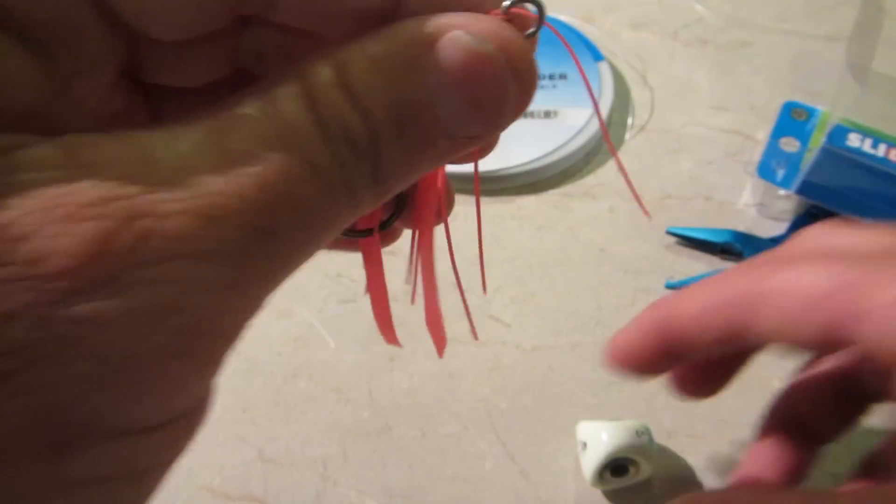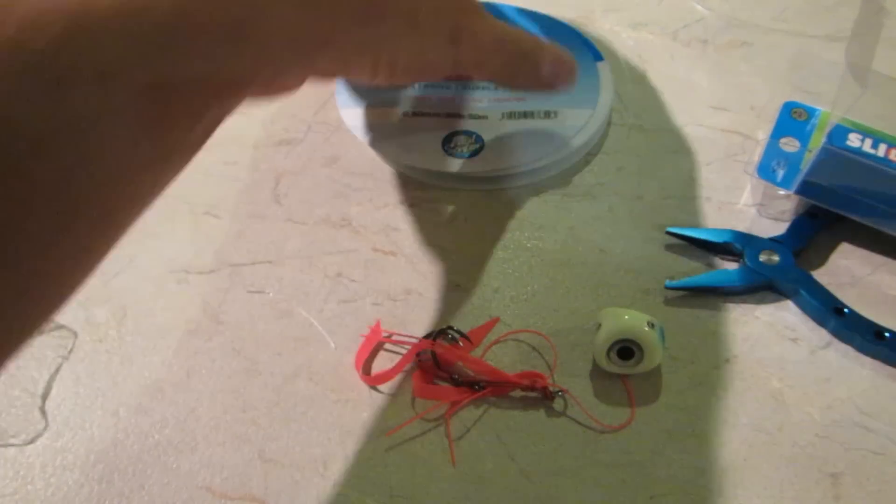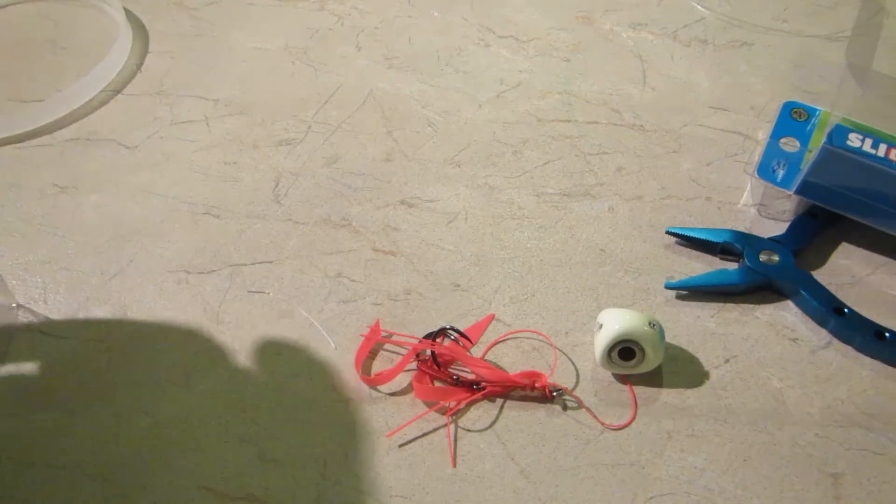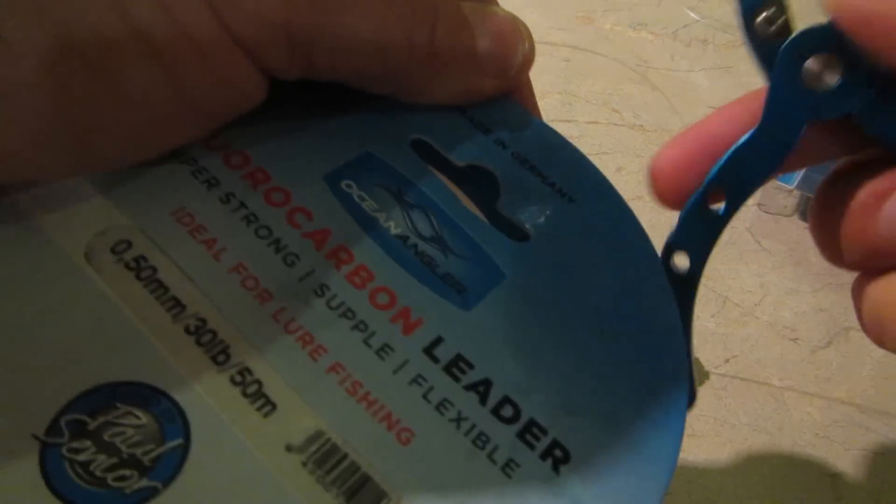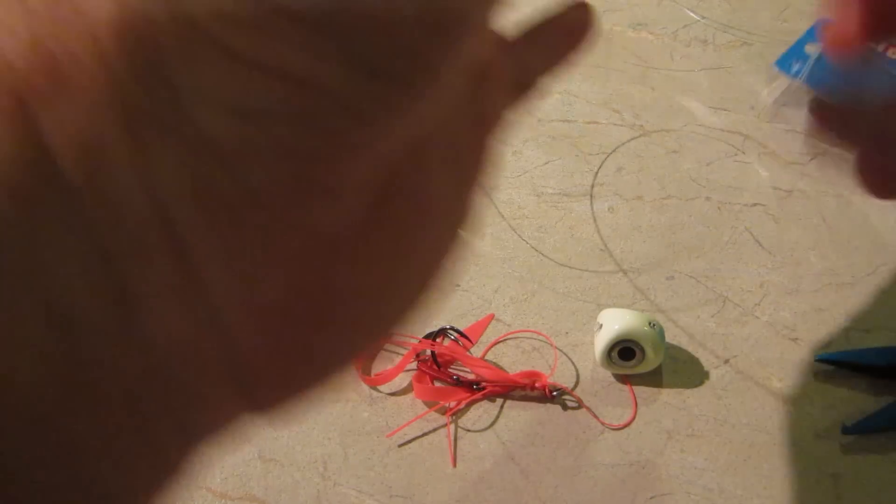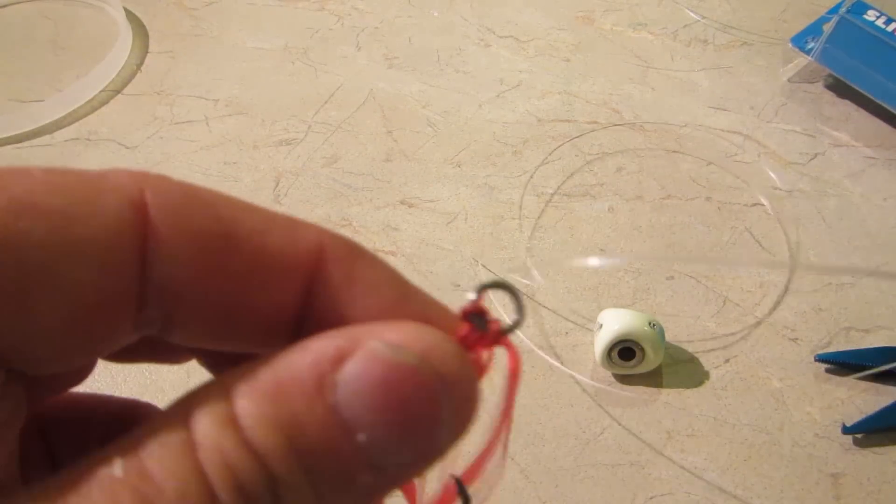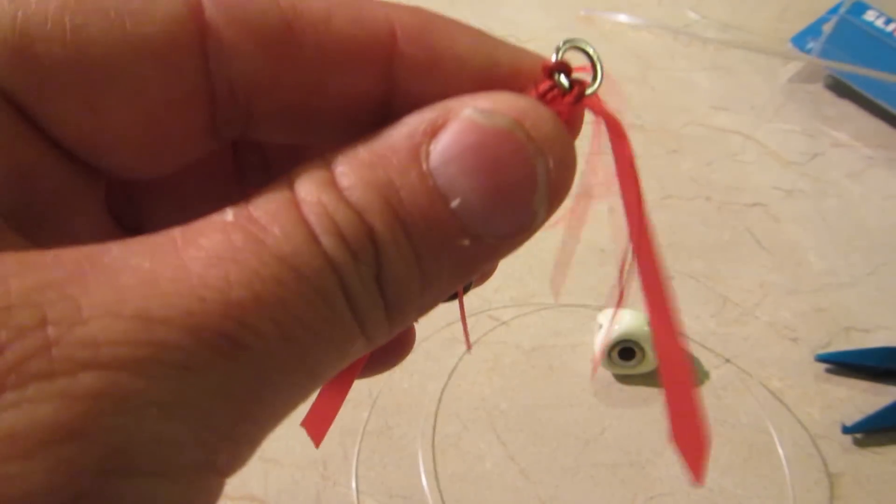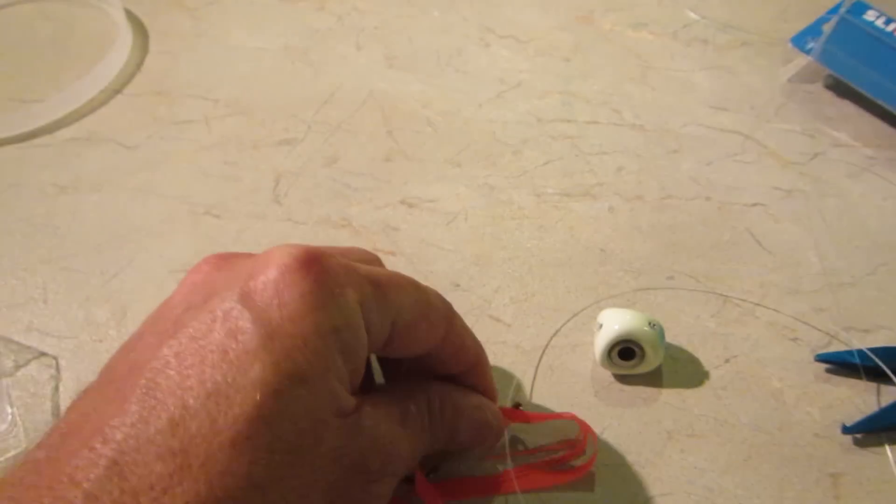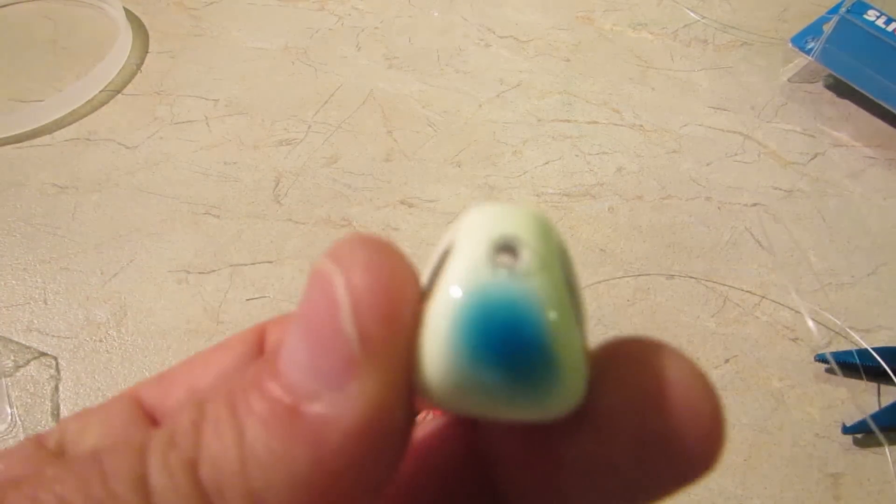What size leader am I using? I'm using 30 pound fluorocarbon leader, that's the size I like to use, and I'm using about a two meter length of it. So we'll pretend this is a two meter length. The reason I'm using 30 pound is because when that goes on there and the snapper comes and bites it, occasionally his teeth might come in contact with the fluorocarbon, so that's why I like to use 30 pound.